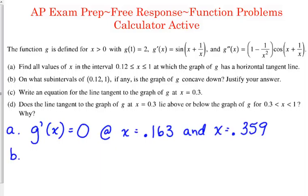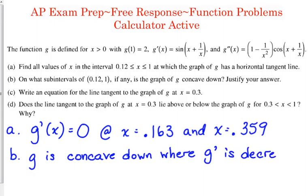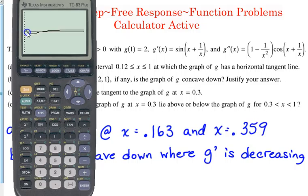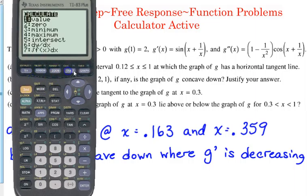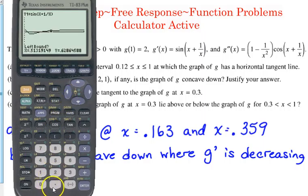On what subintervals from 0.12 to 1, if any, is the graph of g concave down? What if we're just using what we just graphed instead of having to re-graph again? G is concave down where g prime is decreasing. So we're talking about efficiency, guys. Yes, it's true that that's where the second derivative is negative. But to be efficient, you want to just use what you've already got graphed. So it is decreasing there right here at the beginning to this point, and that's it. So you want to calculate that maximum point right there. The maximum there occurs at 0.129.